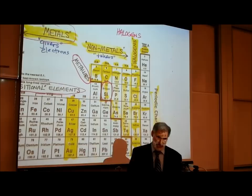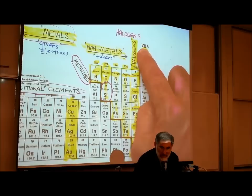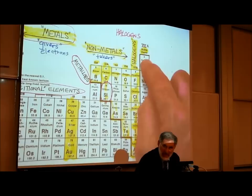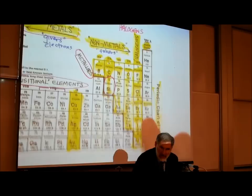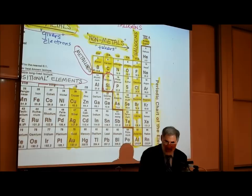The very last column — column eight — is known as the noble gases. We'll tell you more about them. They include helium, neon, argon, krypton — watch out Superman — and xenon and radon.